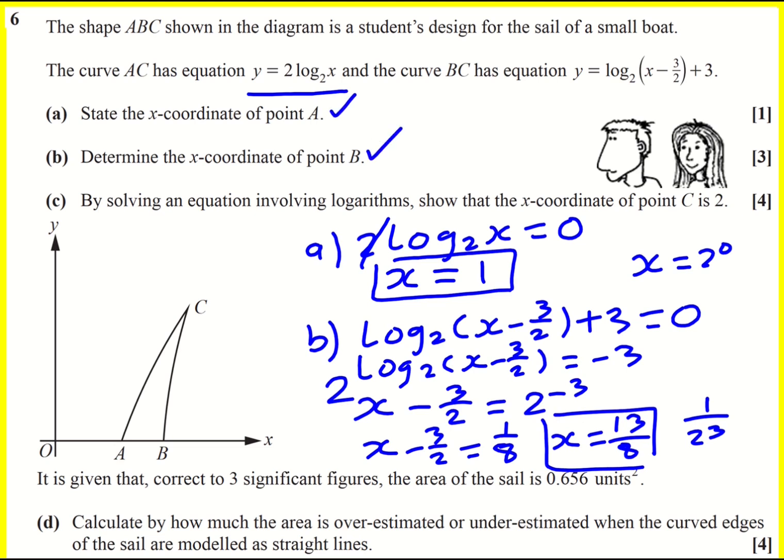This one's sorted, this one's sorted. Now, by solving an equation involving logarithms, we need to show the x-coordinate of point C is 2. So far we've got A at 1, now we've got B at 13/8, which is actually 1 and 5/8, and then we want to show that C is 2.